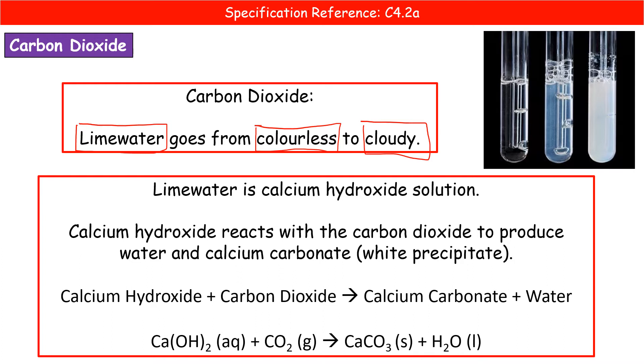If you've done your learning for the first chemistry paper, then you should know what a carbonate ion is, what a hydroxide ion is, and the rest of it you should be able to work out.